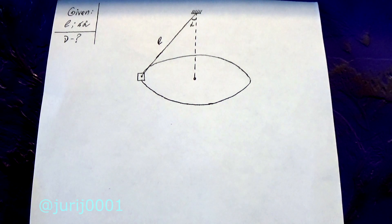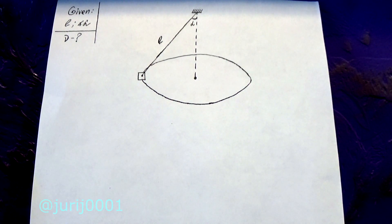Let's write down what we have given. We are given the length of the thread and the angle. You need to find the frequency of rotation of the suspended weight. Let's add forces to this drawing and draw the radius.